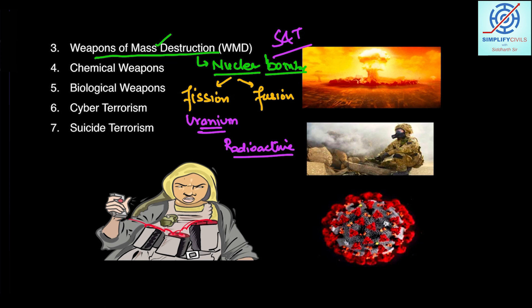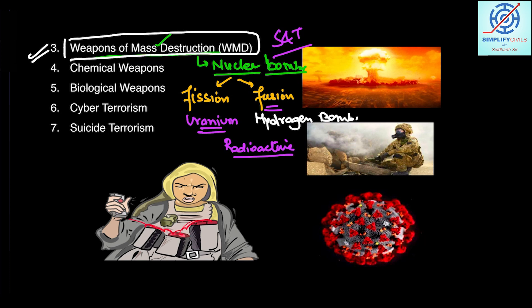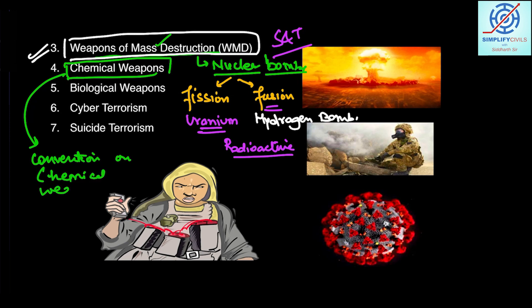Third is weapons of mass destruction — including nuclear bombs (fission using uranium and fusion/hydrogen bombs, both radioactive and harmful to people and their genetic material across generations) and chemical weapons. There is an international Convention on Chemical Weapons and an Organization for the Prohibition of Chemical Weapons (OPCW) that prohibits the spread of hazardous chemicals as a means of terrorism.